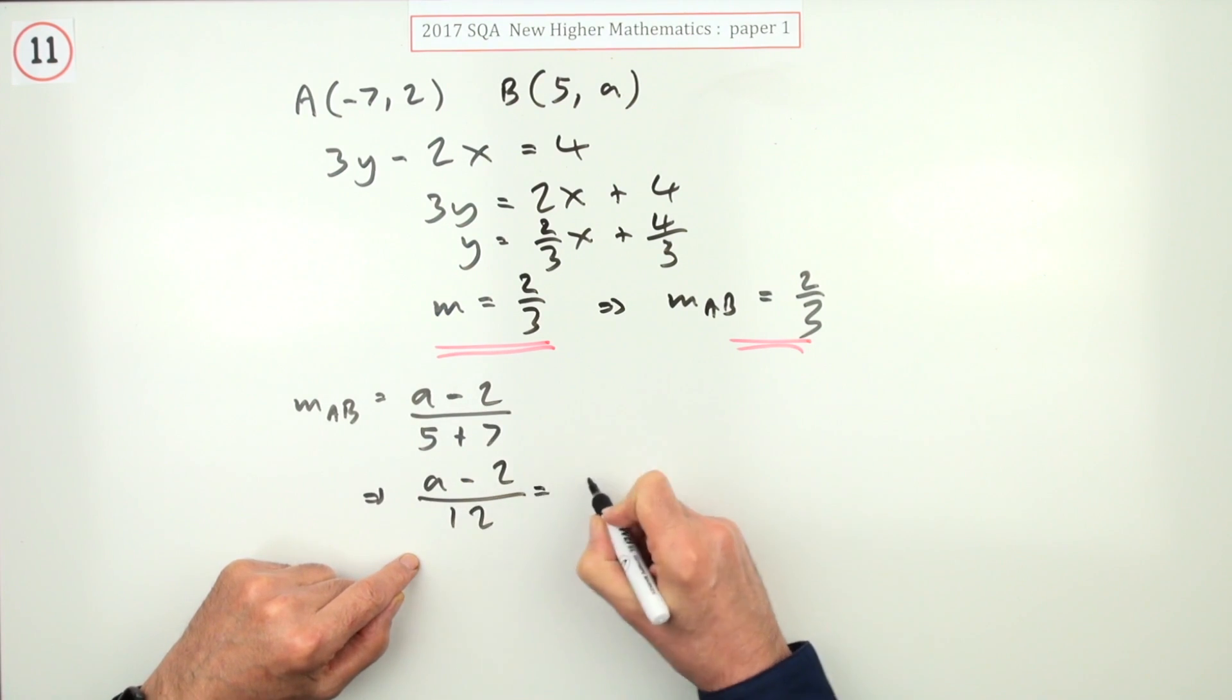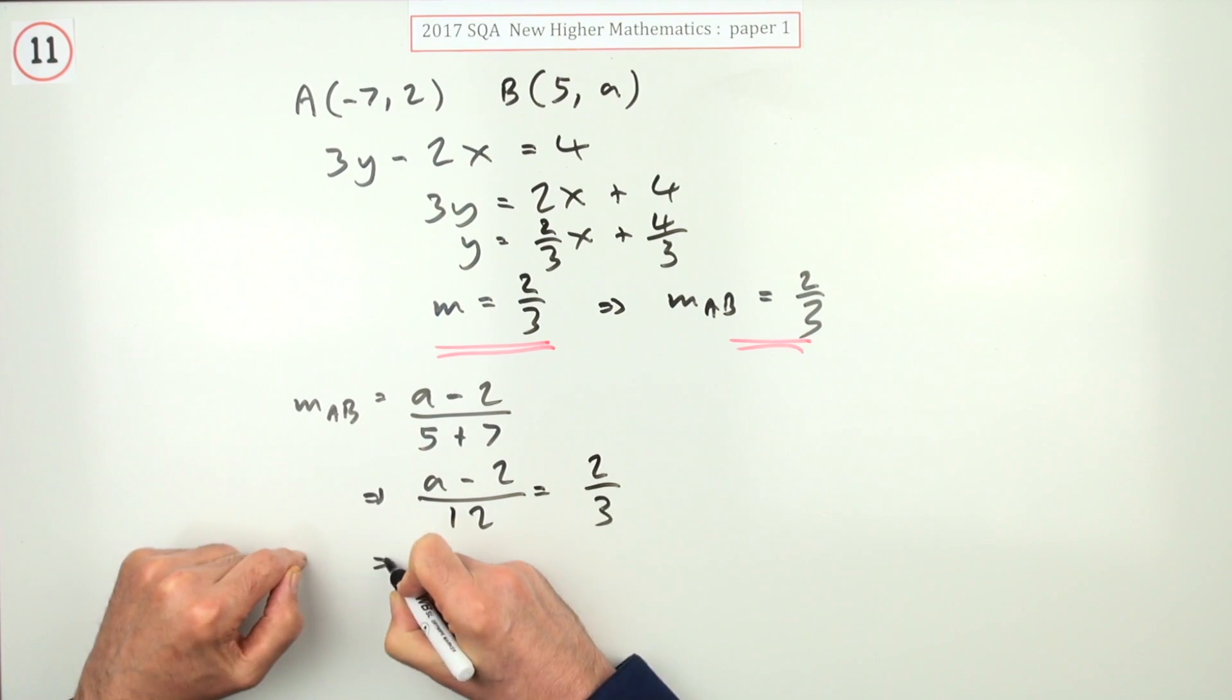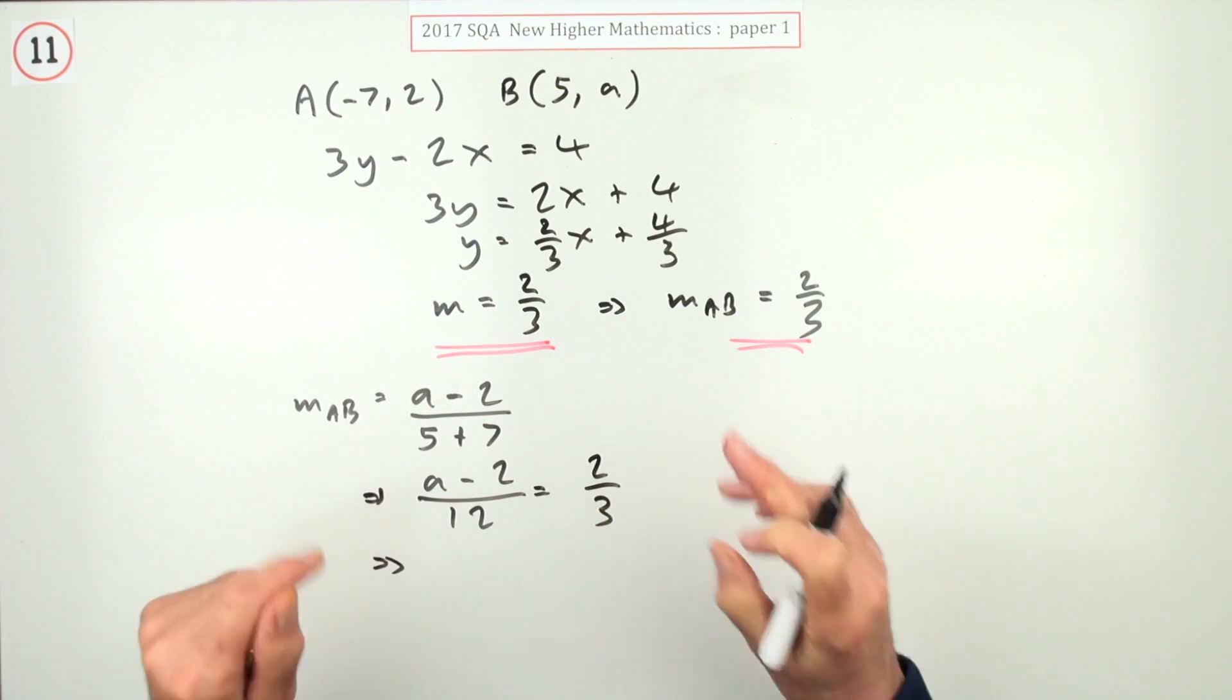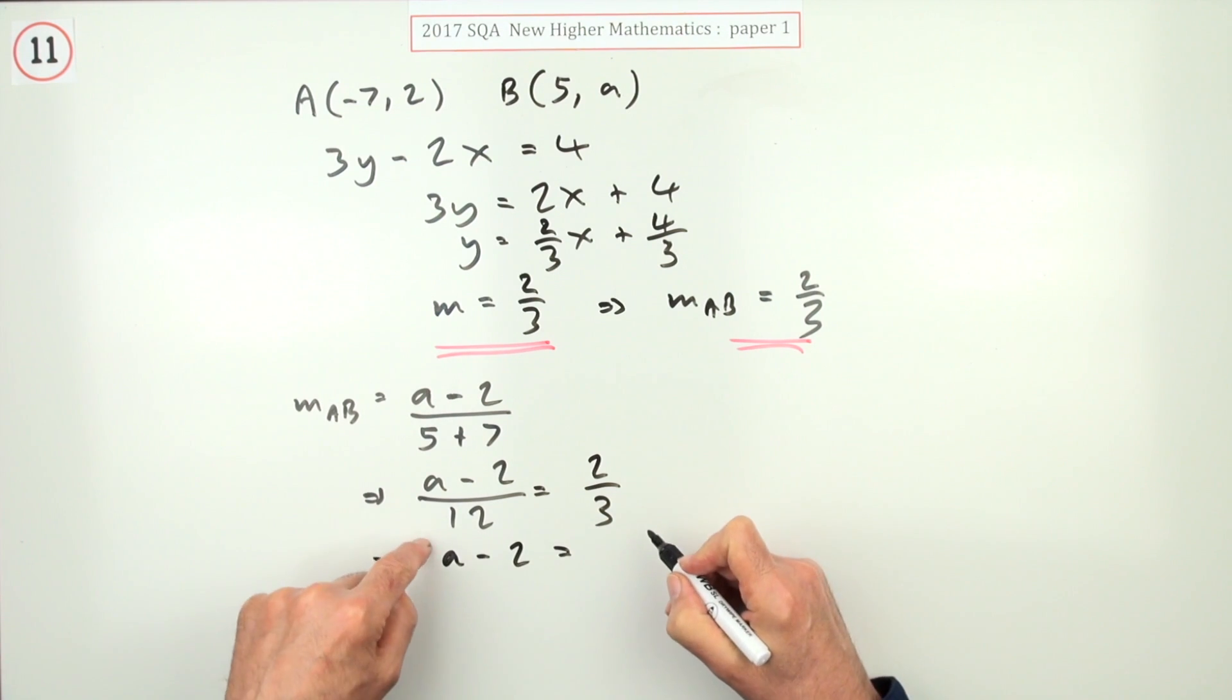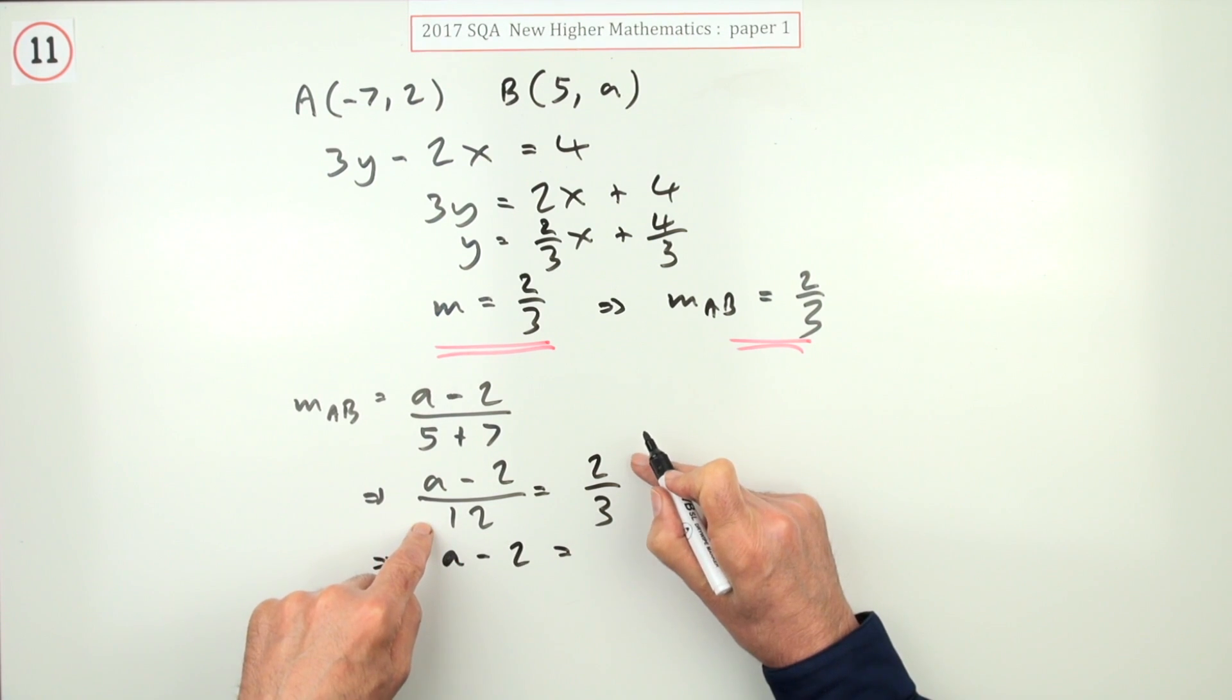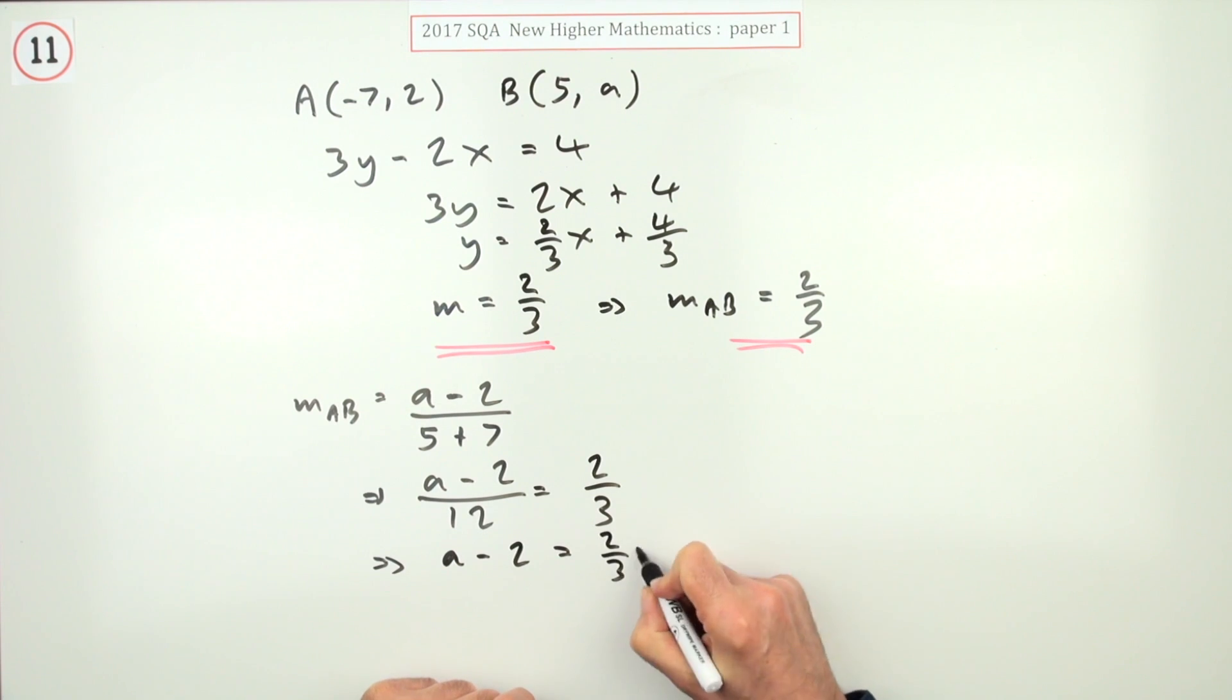So that difference, a minus 2 over 12, should equal two-thirds. Now I could do something cancelling, multiply both sides by 4, but I think I'll just take it across as a minus 2 is going to be 12 times this, which means a minus 2 is going to be 8, which means that a is going to be 10.